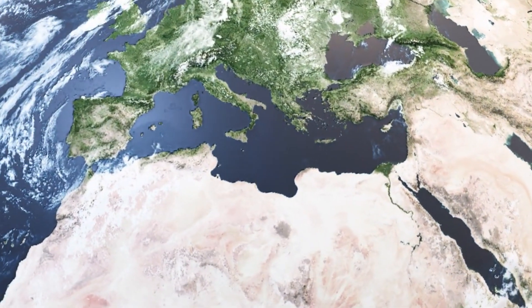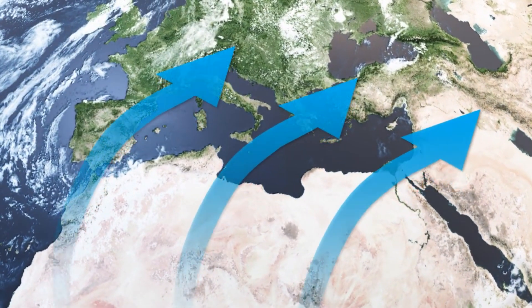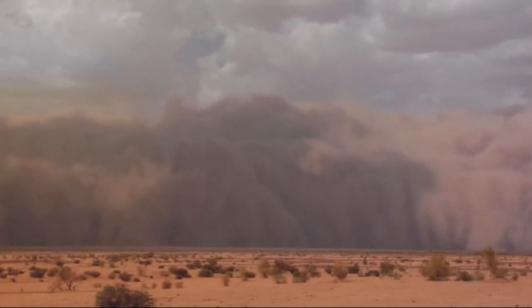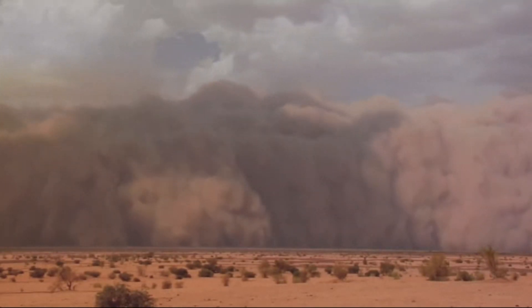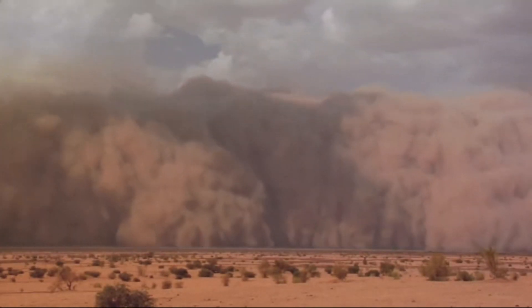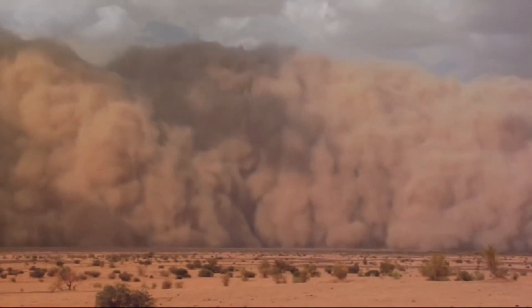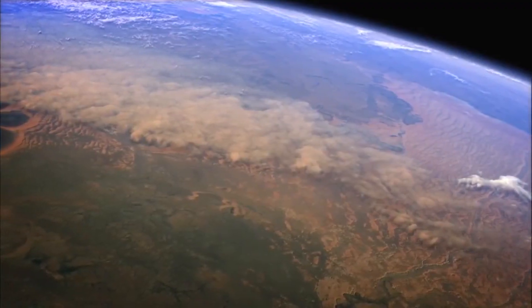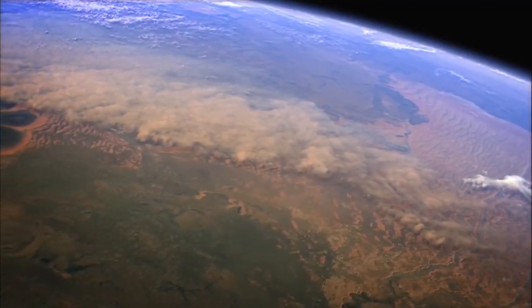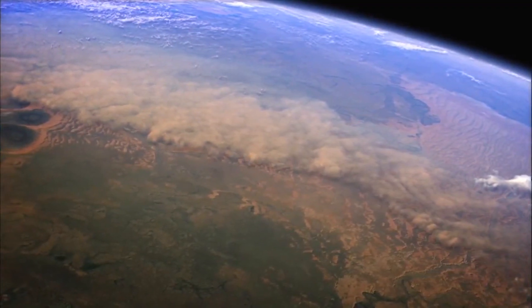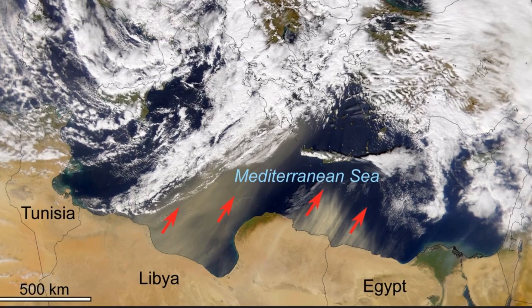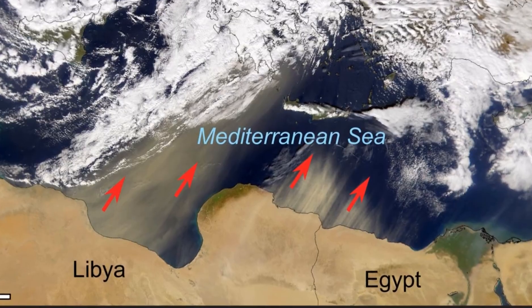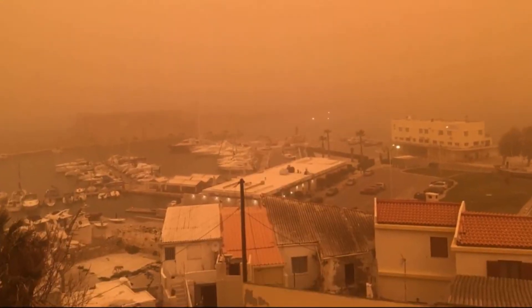Normally this movement of air masses by the Ferrel cells would be fine, but sometimes North Africa can have massive sandstorms that can reach 6km or 3.7 miles in height, filling the sky with hot, dry air full of sand and dust. This mass of sand and dust can get carried by Ferrel cells over the Mediterranean Sea and turn into visibility-reducing Sirocco winds.